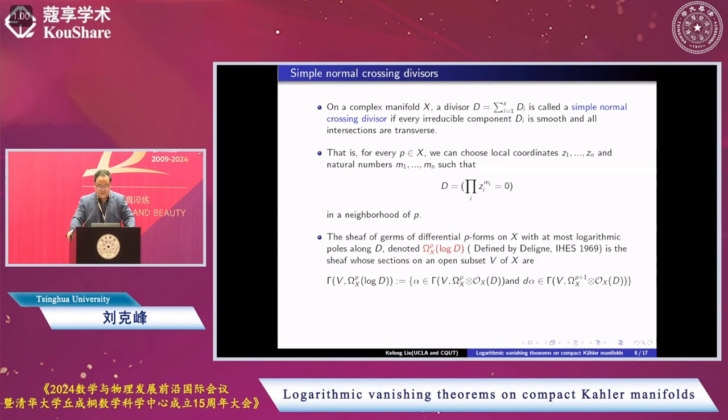These good sections on an open set V of X are given by local sections. The form belongs to omega^P with simple pole and its differential also has simple pole correspondingly. Locally, that means we have a basis for the first S coordinates in the divisor. We use dlog z_i as a basis, and the rest use ordinary basis dz_j.